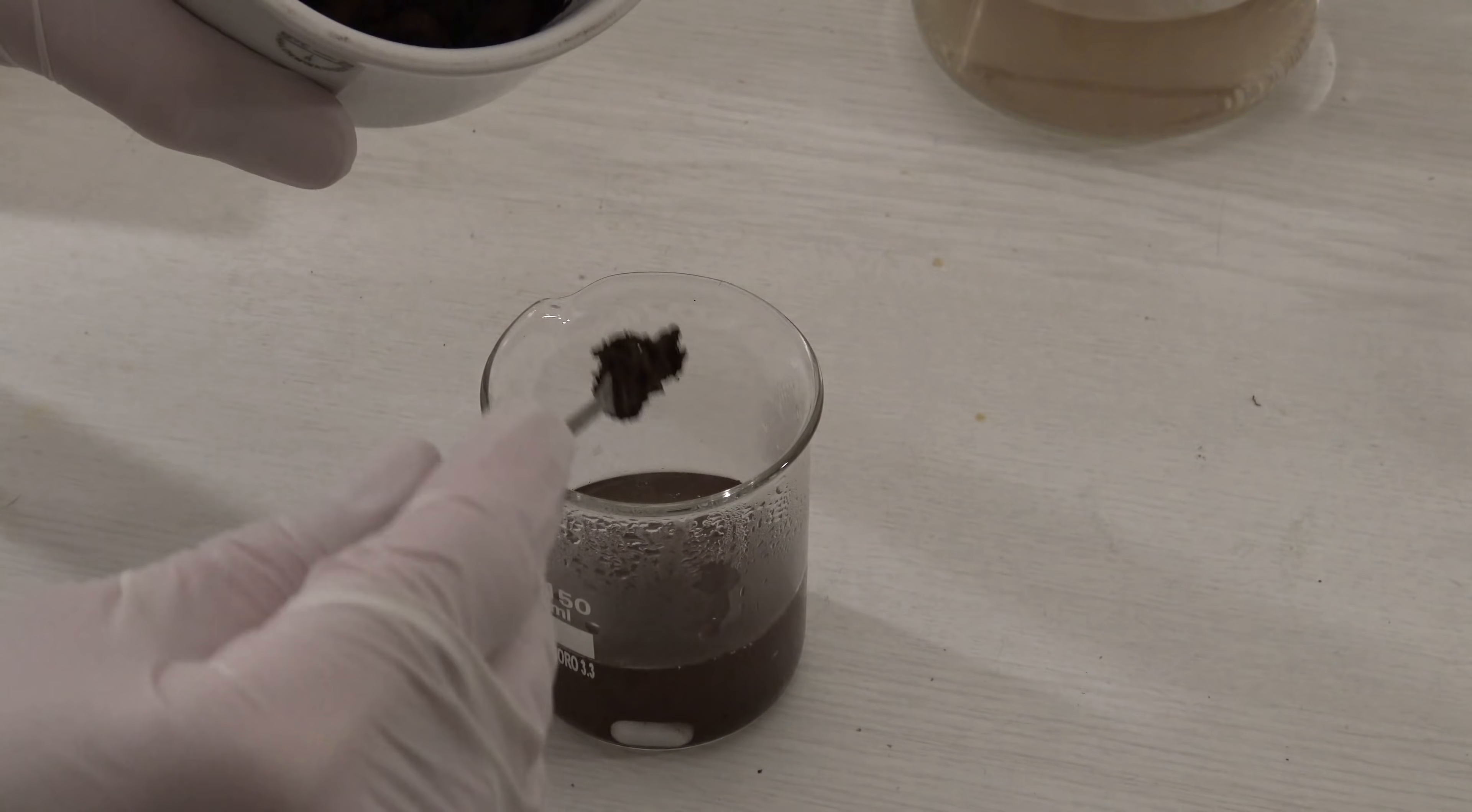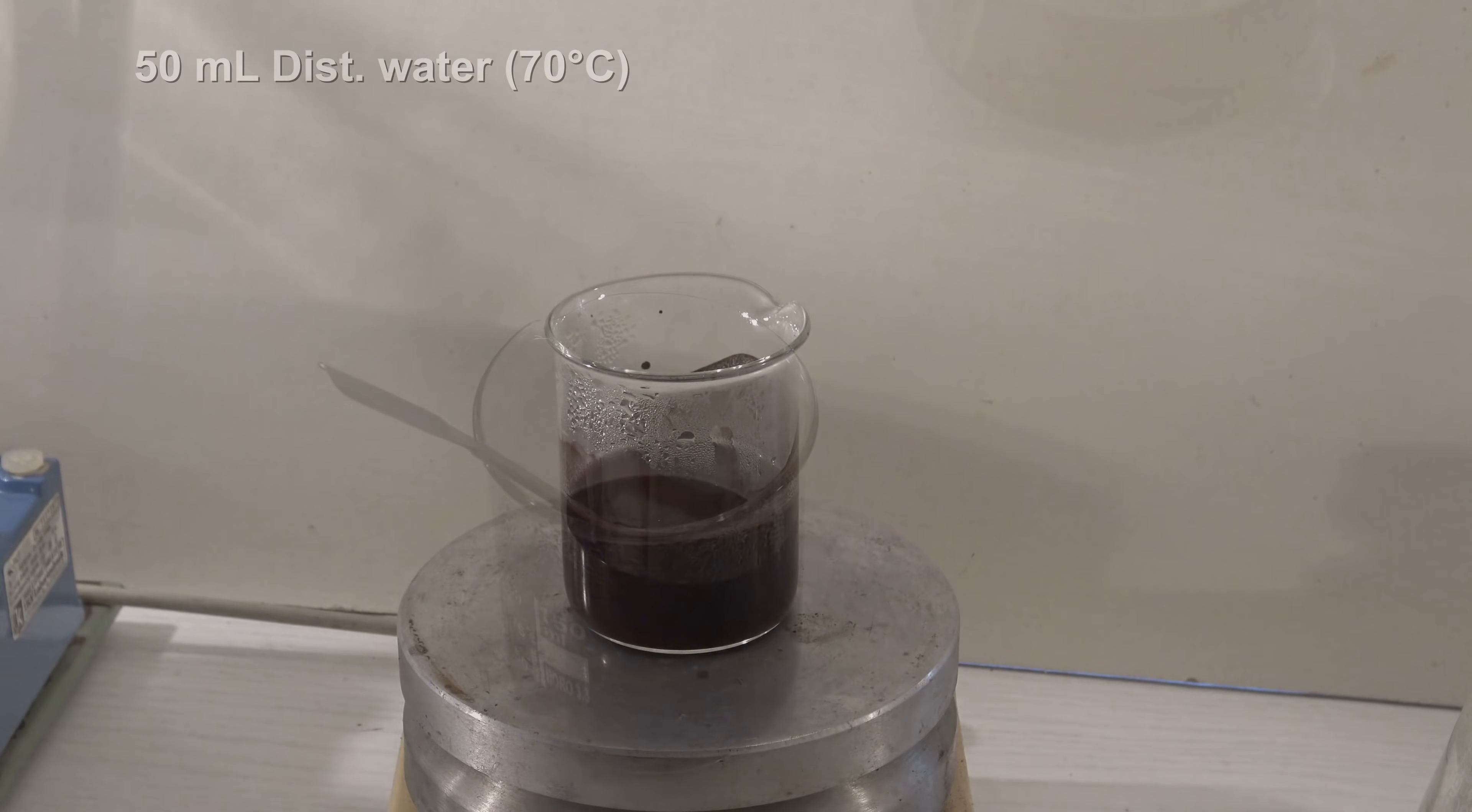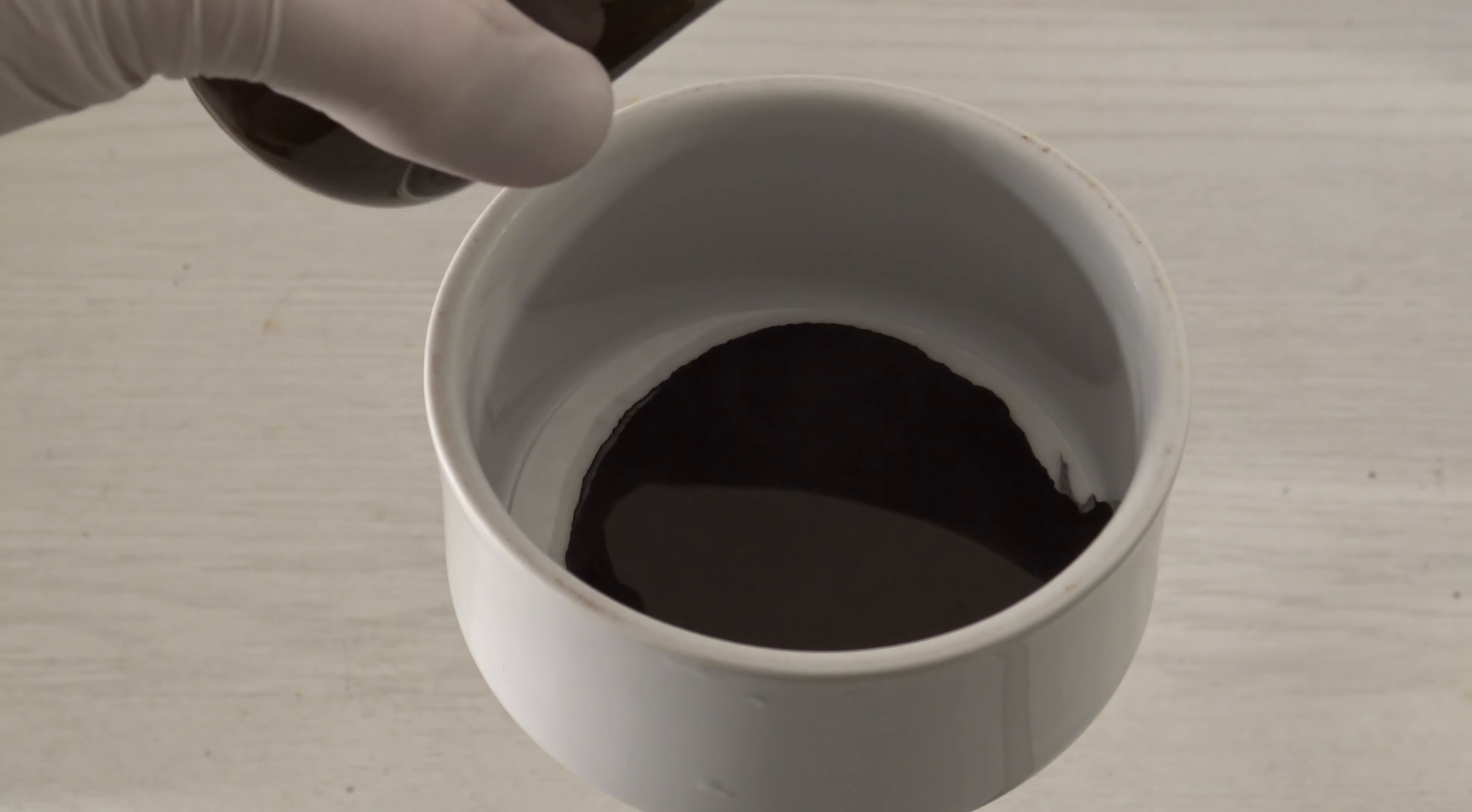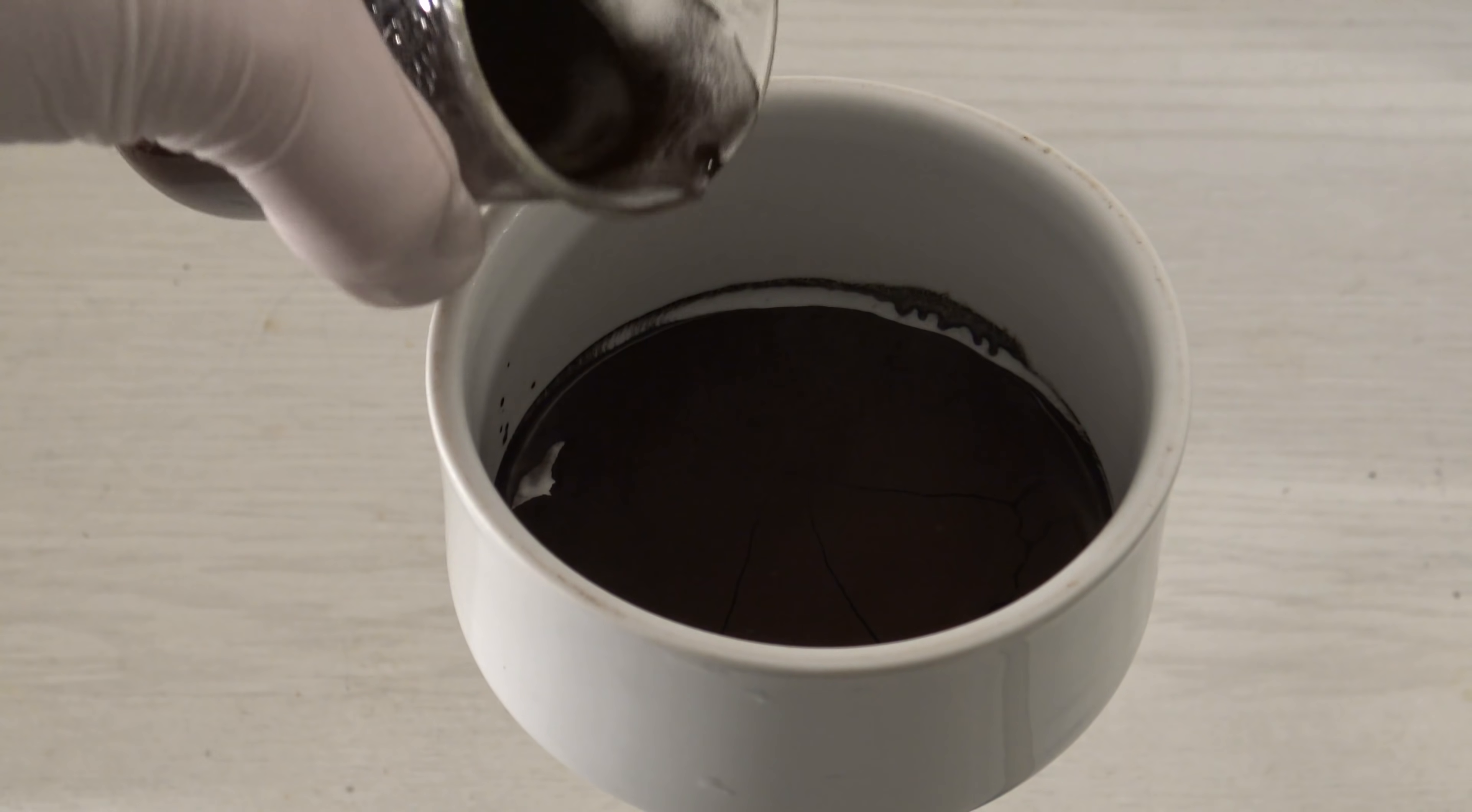After that, the manganese dioxide was added to the residual 50 milliliters of the distilled water. The mixture was then left to sit for 10 minutes at 70 degrees Celsius. This helps to remove last traces of product. The manganese dioxide was filtered off again and the second filtrate was added directly to the first one, while more of the dioxide did pass through the filter.